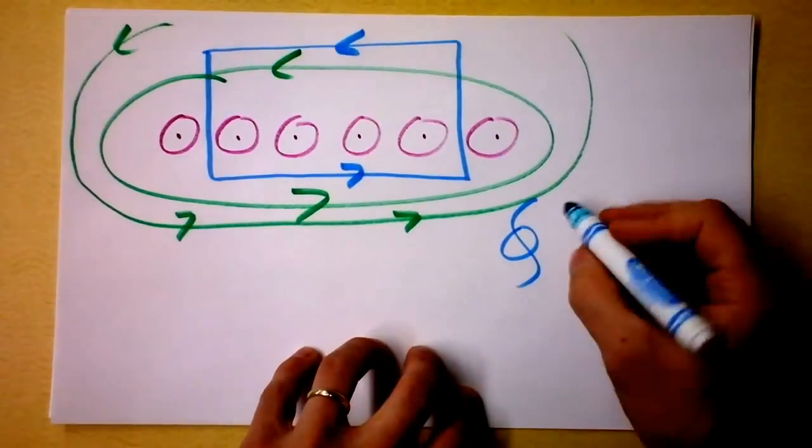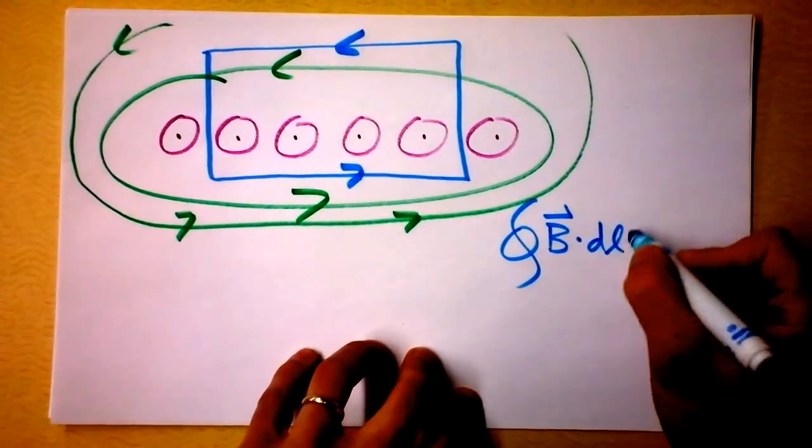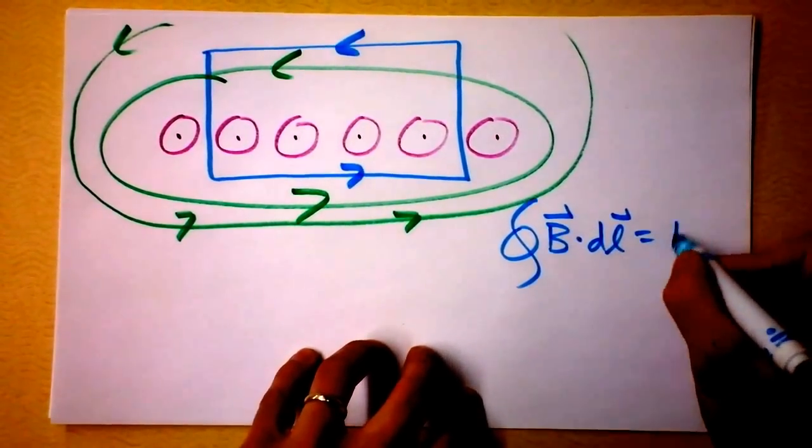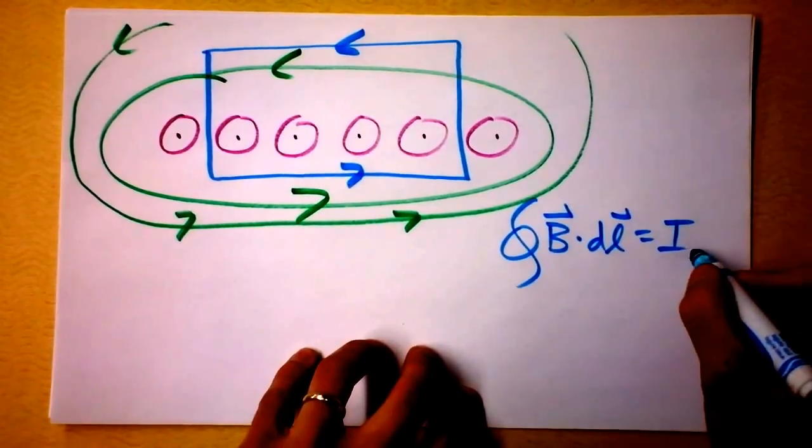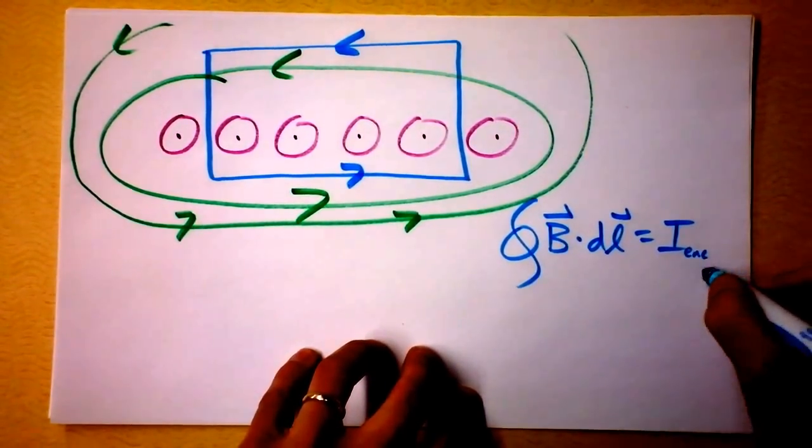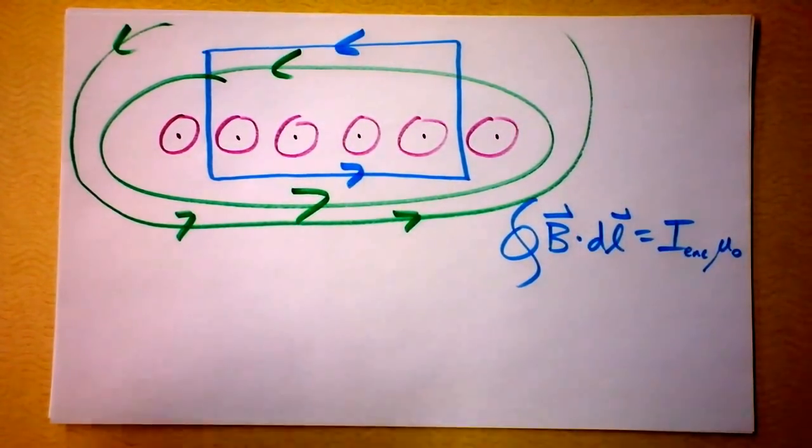And we've got this equation that says if I take a magnetic field and dot it into some length, I'm going to get simply the current that is enclosed times mu-naught. I think that sounds reasonable.